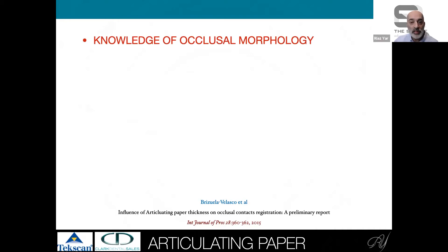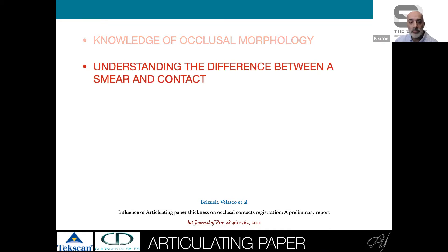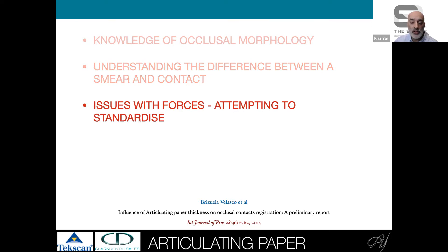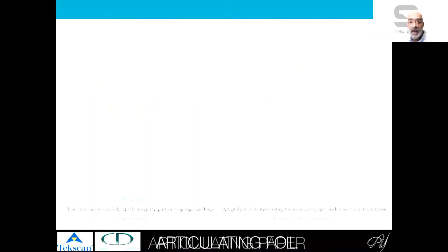To be able to use articulating paper and T-scan, you need to understand occlusal morphology. There are limitations with articulating paper — if you don't know occlusal morphology, you won't know the difference between a contact and a smear. Then you have a big issue: you have no idea what force is there. You may think the greater the color contact, the greater the force — that isn't necessarily true.